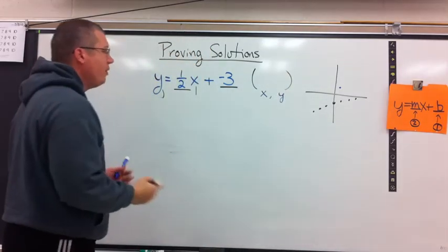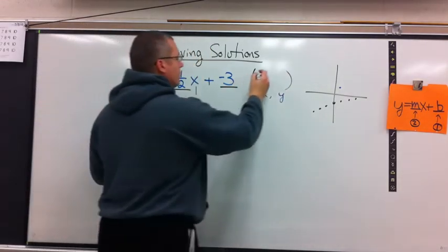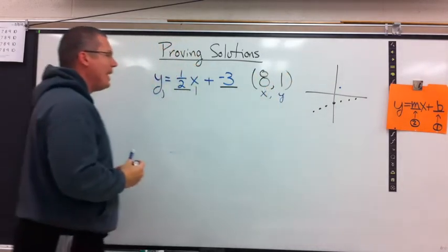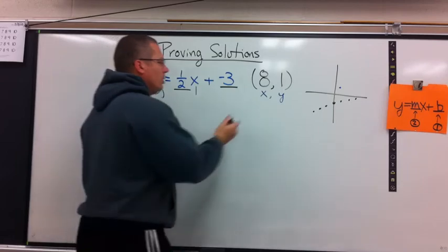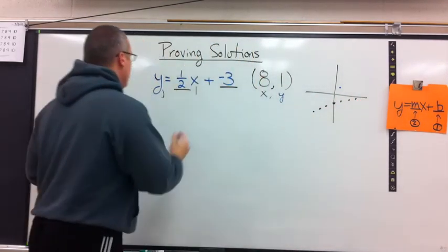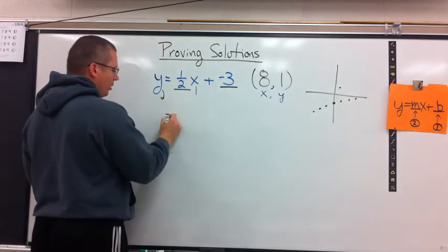What if I had a different ordered pair? What about 8 comma 1? 8 over 1 up. Well, I don't have this drawn to scale. It's tough to see. Let's substitute in numbers and see if it works.